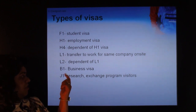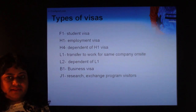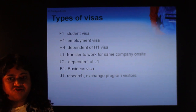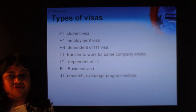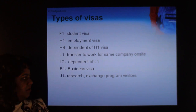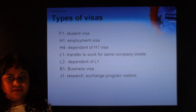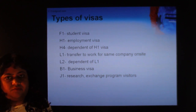J-1 is a visa for research exchange program visitors. For example, if ISRO in India and NASA want to collaborate, a researcher might come on a J-1 visa. Many university researchers also get J-1 visas and then apply for H-1. If you have a PhD, you can get a green card relatively easily. Green card categories are EB-1 for PhDs and highly specialized skills, EB-2 for master's degree holders, and EB-3 for bachelor's degree holders — each with different processing times.